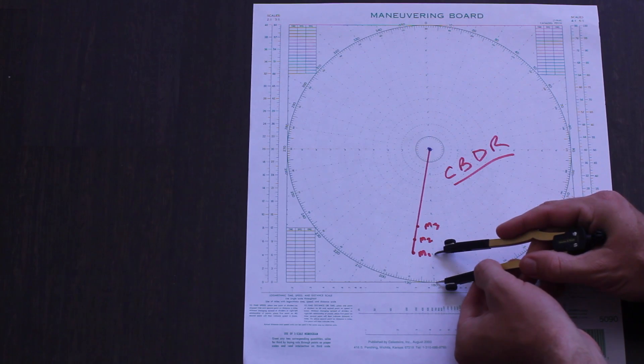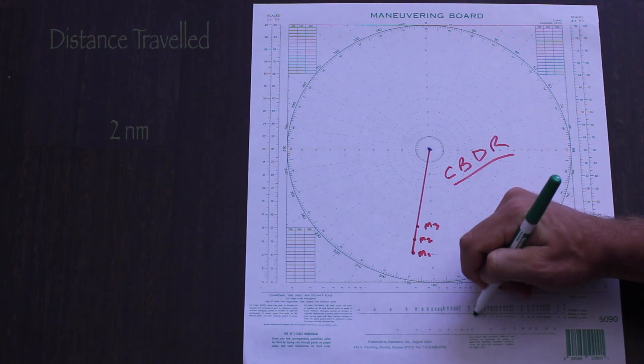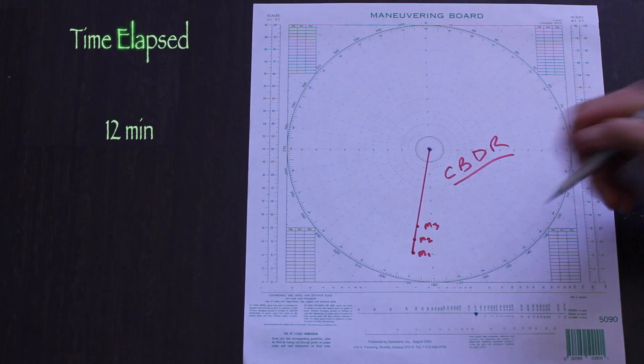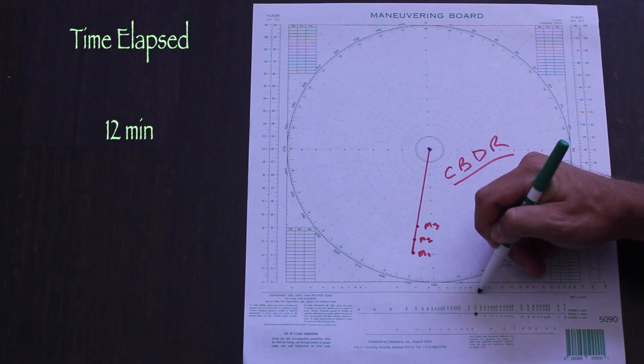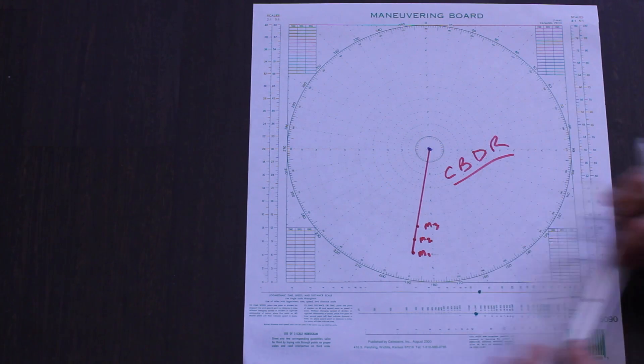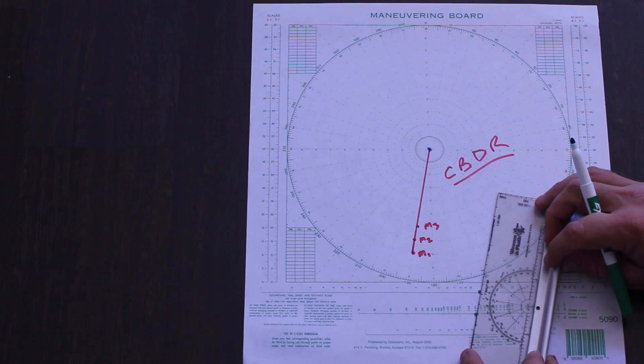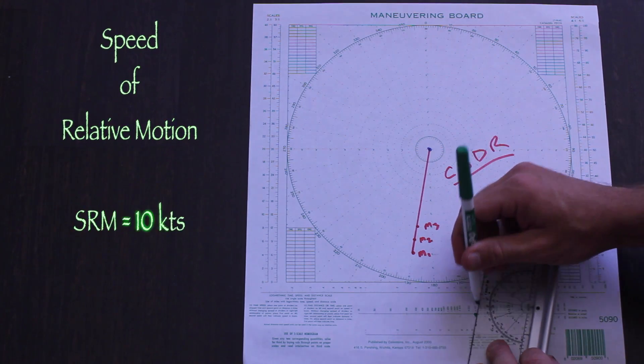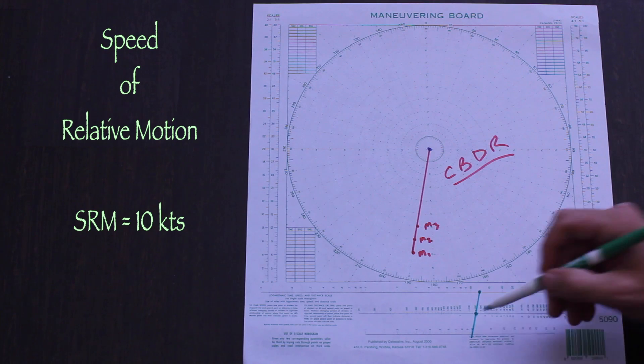To do that we need to find out how quickly the contact is moving down the relative motion line and we'll use the nomogram to help us out. We can measure that the contact traveled 2 nautical miles in 12 minutes, so we put the tick marks at the appropriate places on the nomogram.